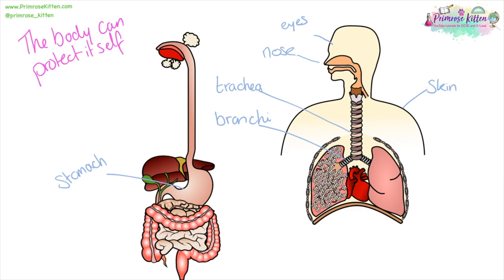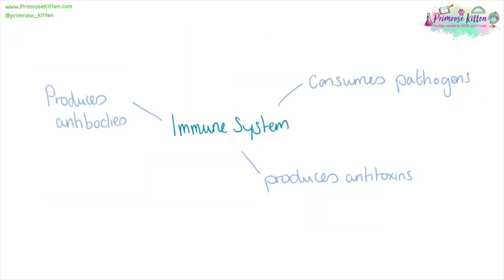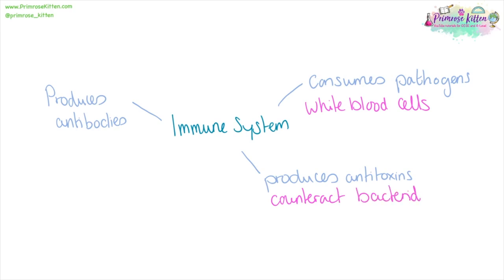The body is rather good at protecting itself against pathogens. The stomach is full of acid which kills bacteria. Your respiratory system — your nose, trachea, and bronchi — are full of mucus and hairs which trap bacteria. Your skin acts as a barrier which stops things getting in, and your eyes have tears which wash them out clean. Your immune system is brilliantly clever: white blood cells will engulf and destroy anything they see as unfamiliar and dangerous, they produce anti-toxins to counteract the toxins that bacteria produce, and they produce antibodies so that they can recognise pathogens faster.